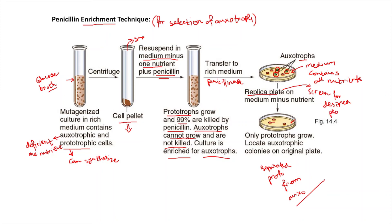Altogether, why is this technique called the penicillin enrichment technique? Because once the prototrophs are killed by penicillin, the medium becomes enriched with auxotrophs. What you are doing is killing all the prototrophs by the use of penicillin, and once the prototrophs are killed, the medium becomes enriched with auxotrophs. Because penicillin is helping in the enrichment of the medium with auxotrophs, this test is called the penicillin enrichment technique.